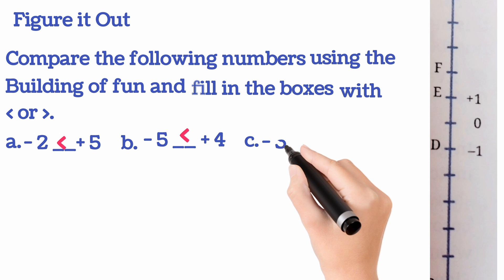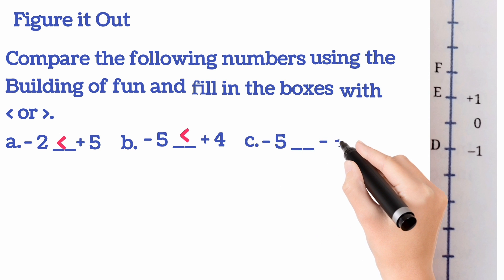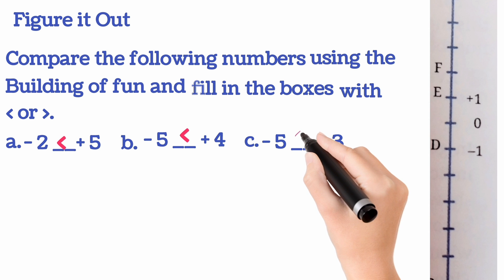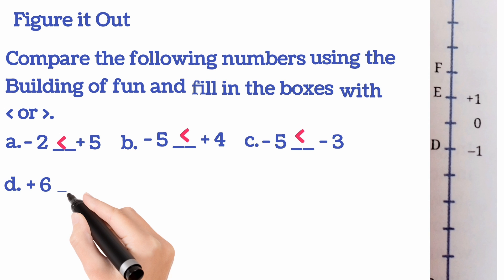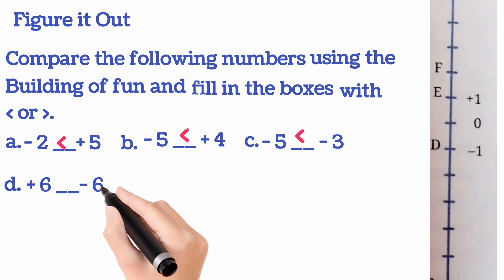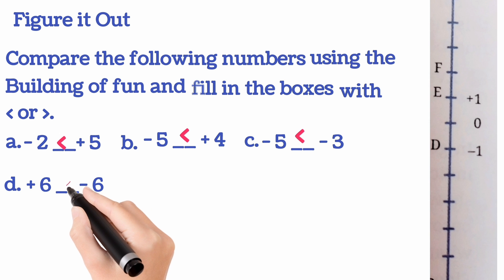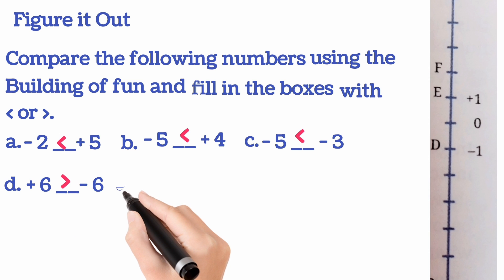Now, next one. Number C. Minus 5 and minus 3. Now, remember, negative integer, the smaller one is the bigger one, greater one. So, minus 3 is greater than minus 5. Now, next one. Plus 6 and minus 6. Very easy. Plus 6 is positive integer. So, definitely this is greater than minus 6.